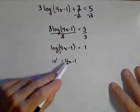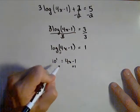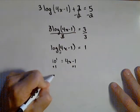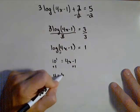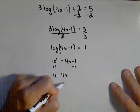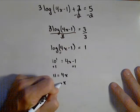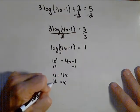10 to the first is just 10, so we'll add 1 to both sides. We get 11 equals 4x, or x equals 11/4.